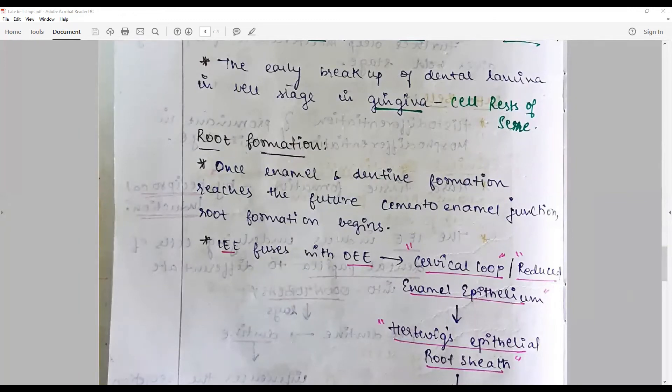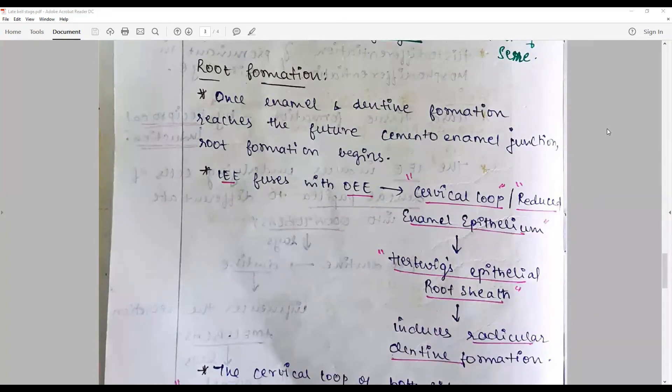The collapse of the stellate reticulum and stratum intermedium because of the exhaustion of the nutrition leads to formation of reduced enamel epithelium and the diaphragm formation or the cervical loop. This is called as the Hertwig's epithelial root sheath, which drops down or elongates, divides, and undergoes spontaneous apoptosis, exposing the newly formed dentine to the dental sac.